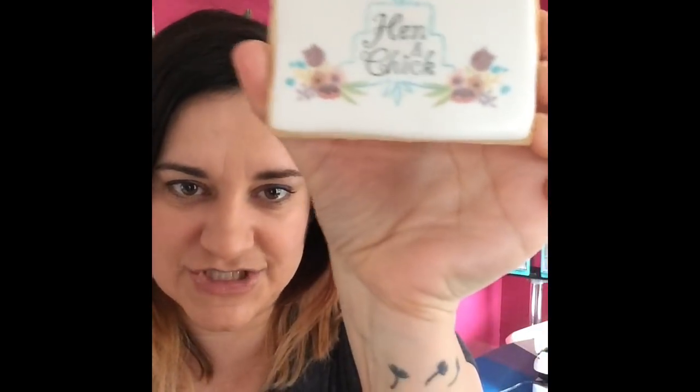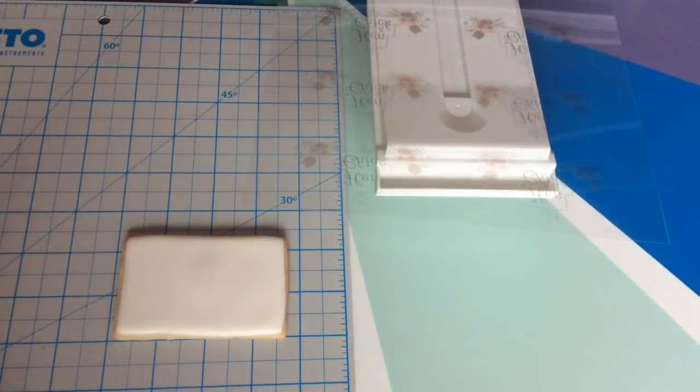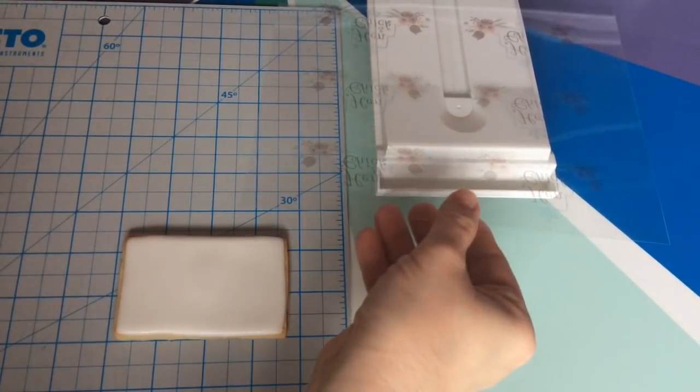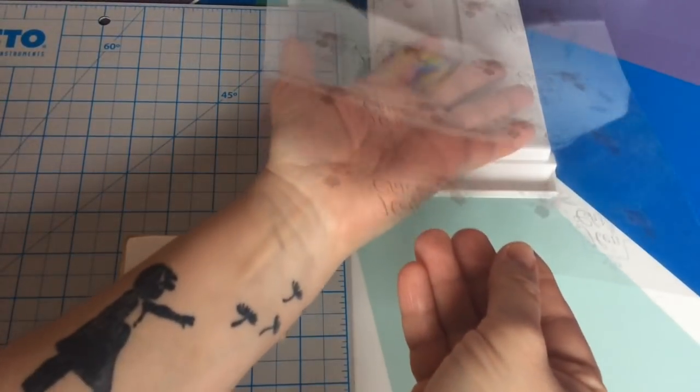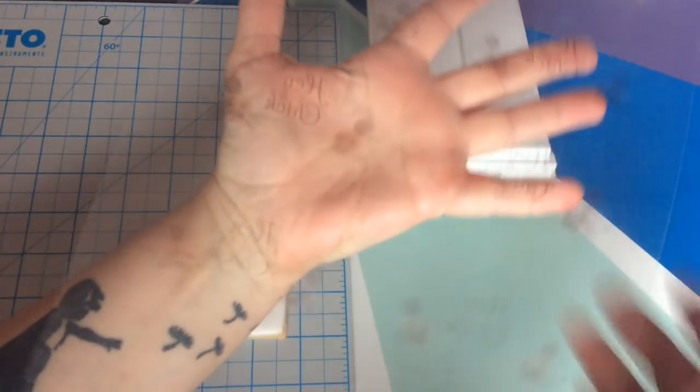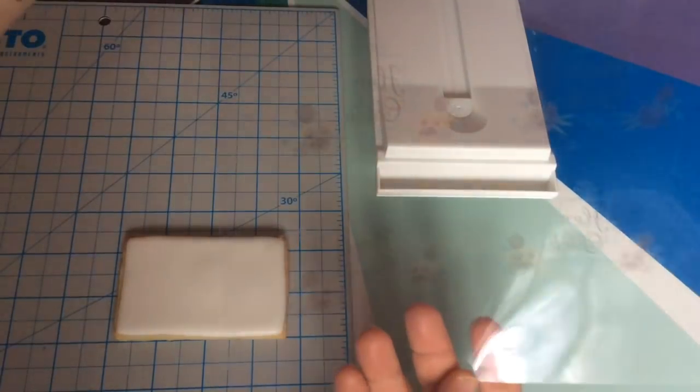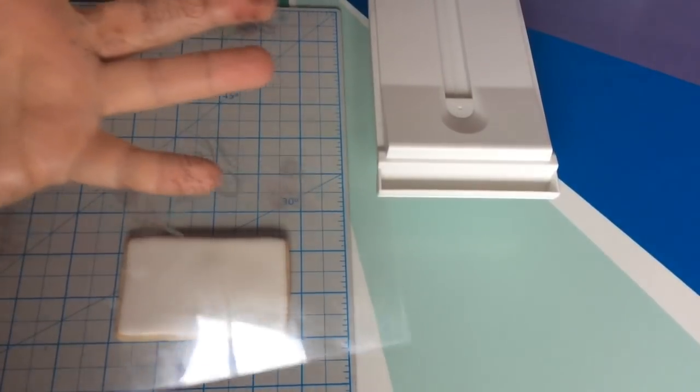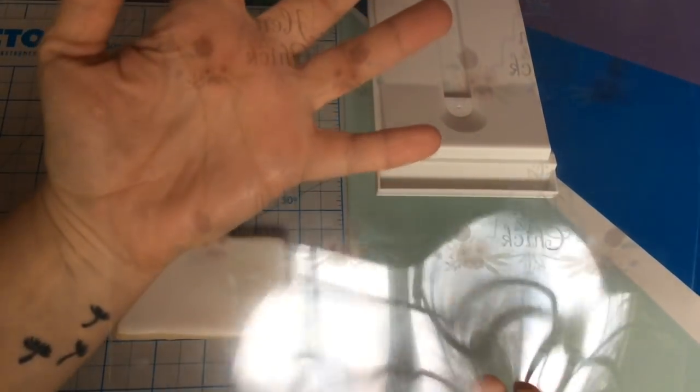What you need to get started is a cookie with royal icing that's been fully dried overnight as a base coat. You need an edible ink printer—mine's from Icing Images and may be purchased by clicking on the link in the description below this video—and you need a sheet of acetate that fits in your printer, eight and a half by eleven.